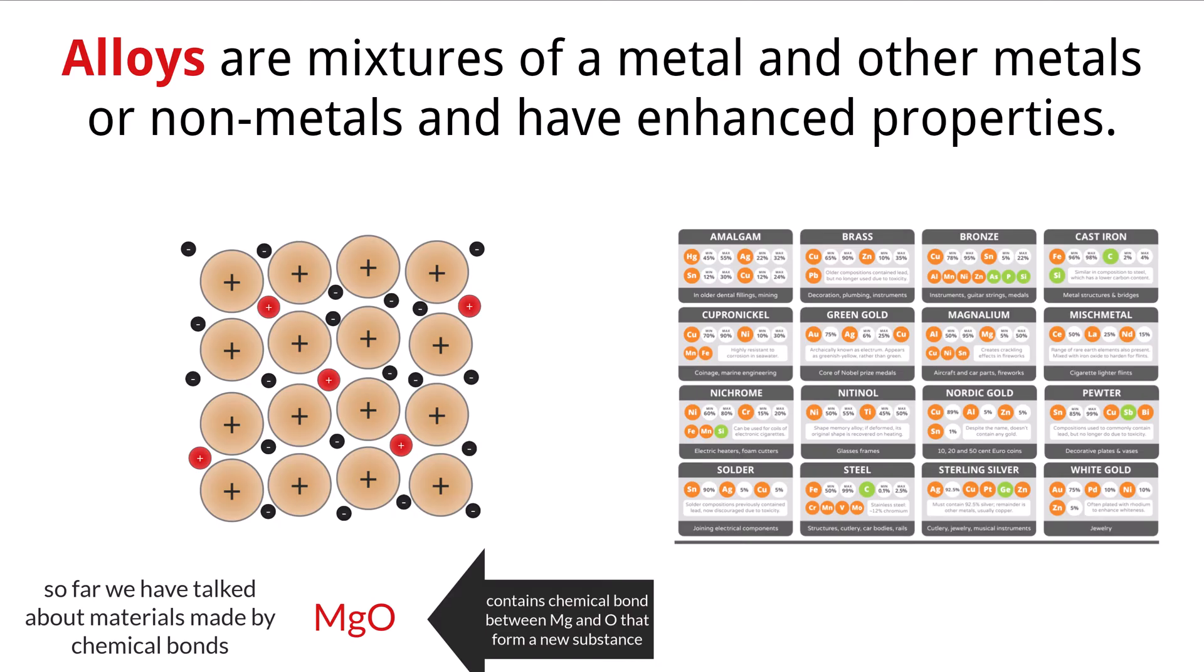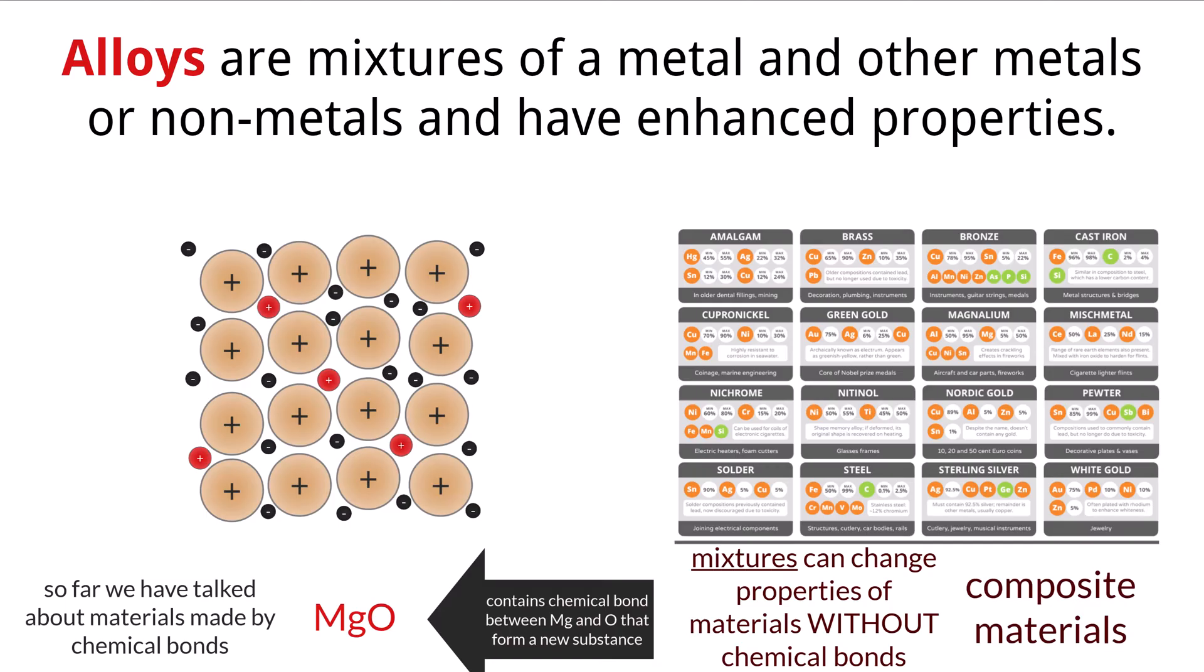But we can also change properties on a molecular level without having to chemically bond elements or compounds together. By creating a mixture, properties of materials can be enhanced to suit a specific need. We call these composite materials. Because it's not a new bond, these mixtures of materials still hold their original properties and can help create these enhanced substances. Materials such as fiberglass and concrete are good examples of enhanced composite material.